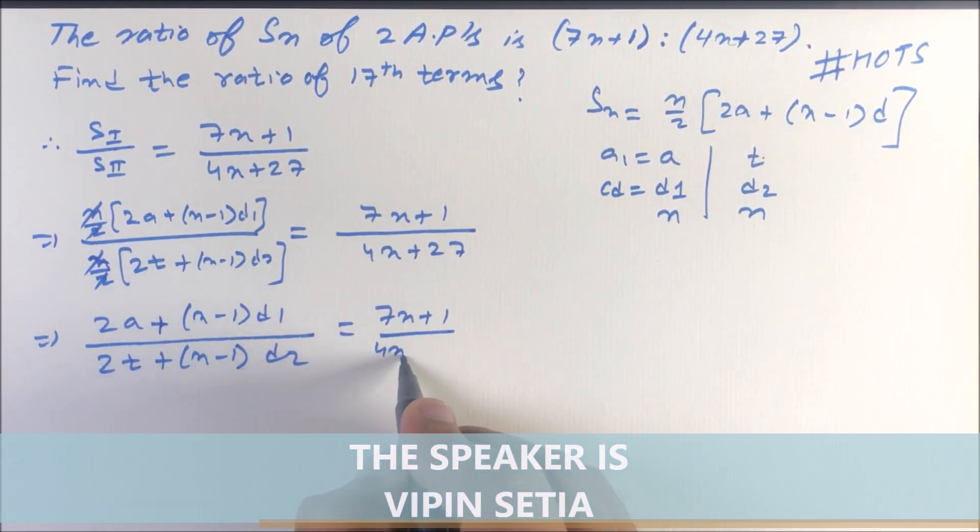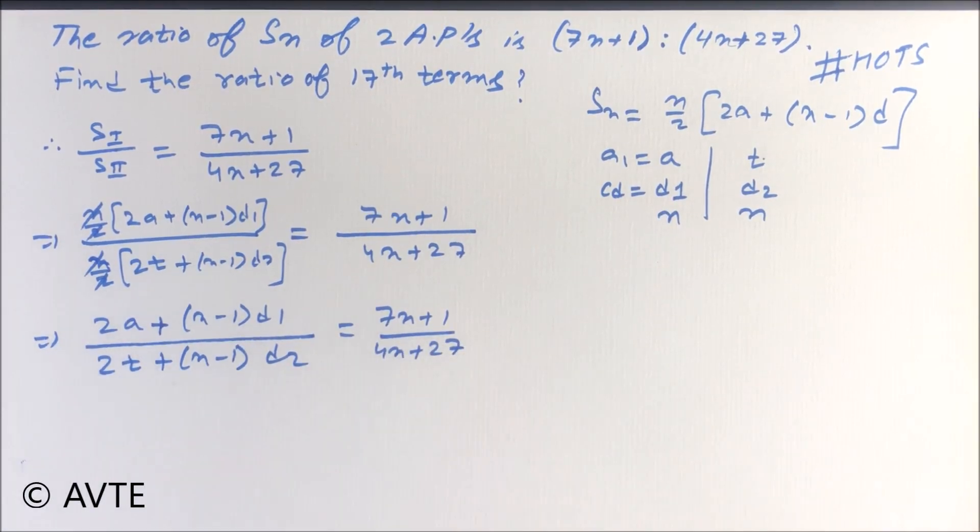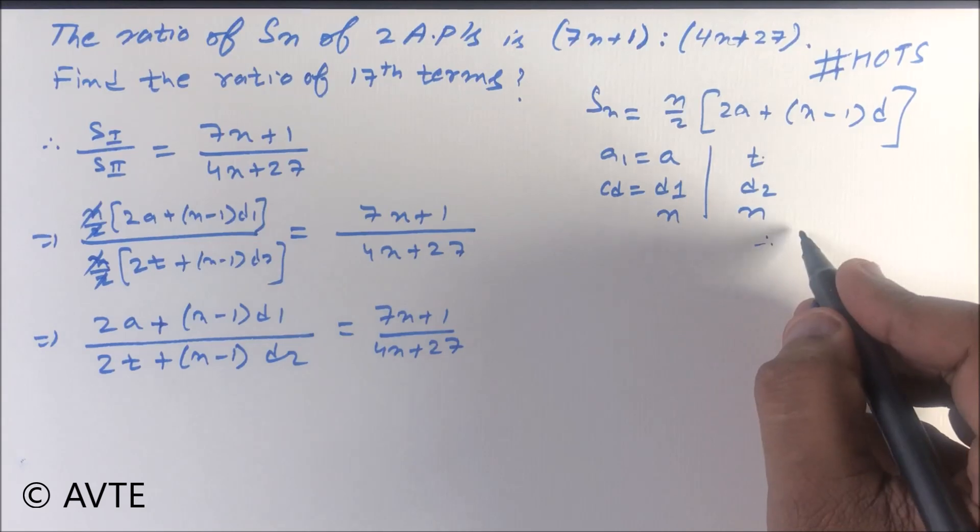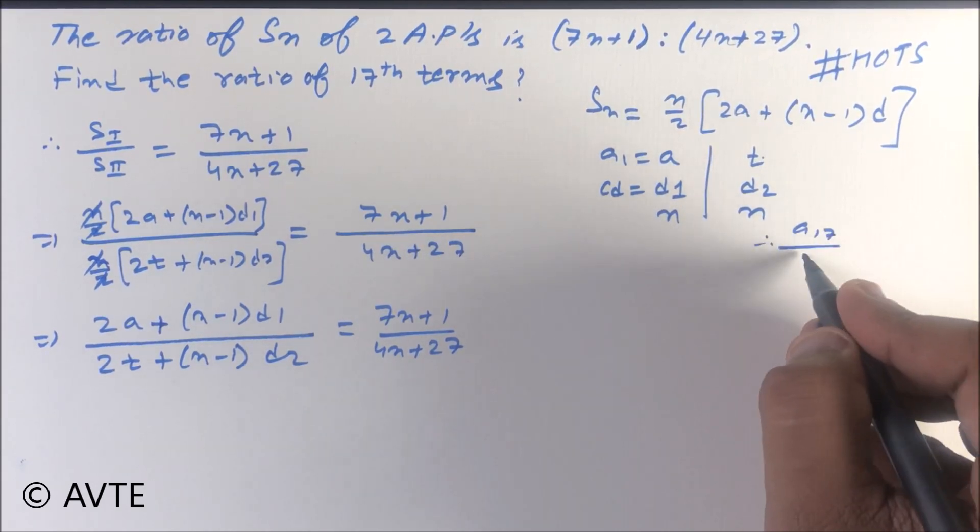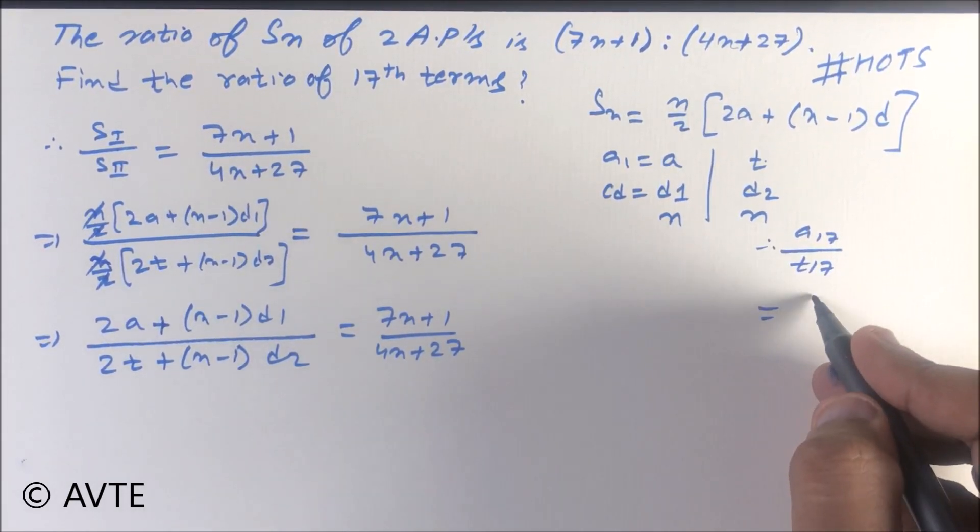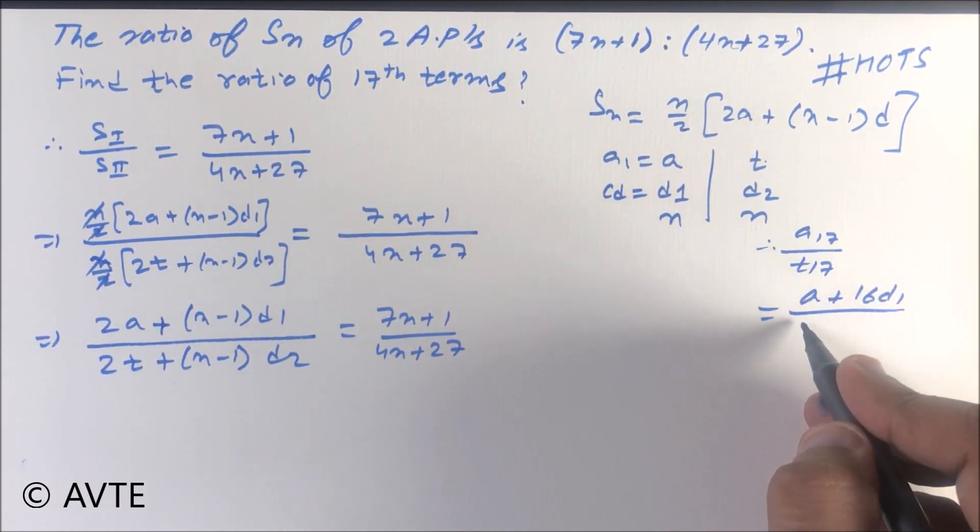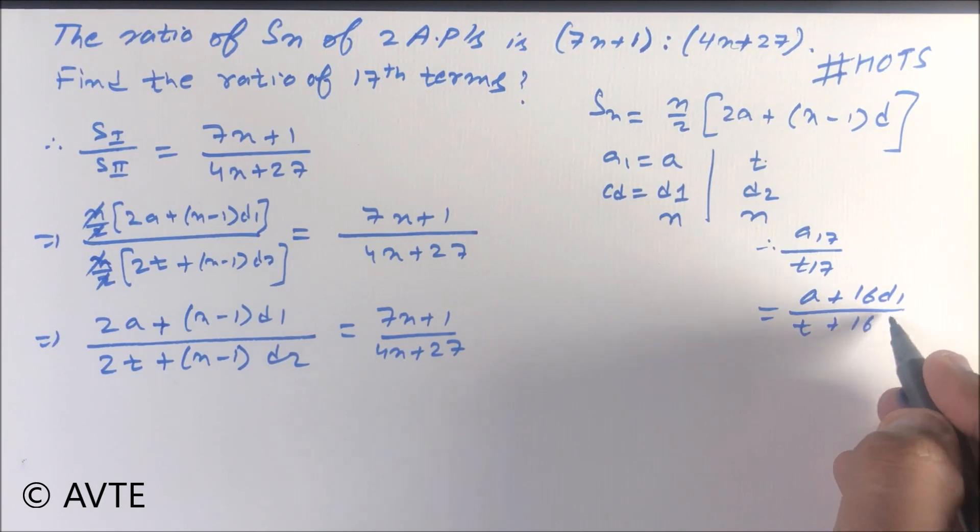So guys, we have to find the 17th term ratio, which is a17 upon t17, which is a plus 17 minus 1, that is 16 d1, upon t plus 16 d2.